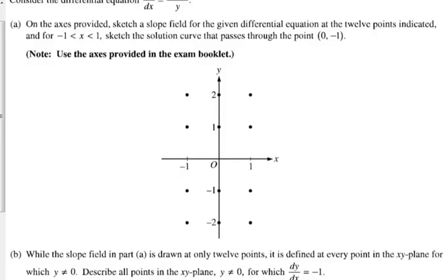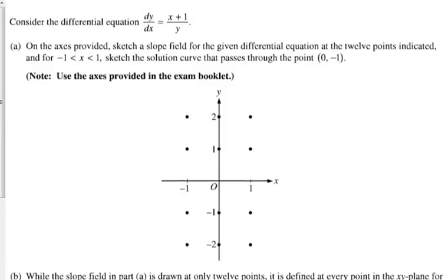Then I want you to sketch the slope field through the 12 points indicated, and between negative 1 and 1, sketch the solution curve that passes through the point (0, -1).